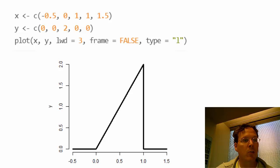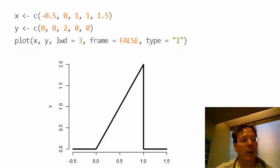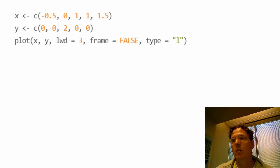Calculating its area isn't hard because it's a right triangle: one-half times the base, which is 1, times the height, which is 2, equals 1. So the area is 1, and this is indeed a valid probability density function.